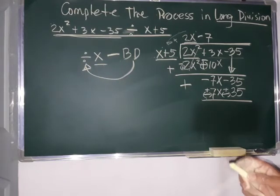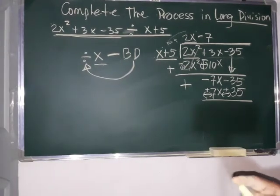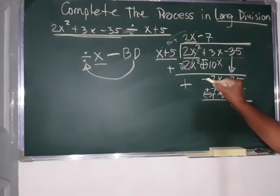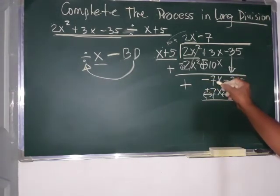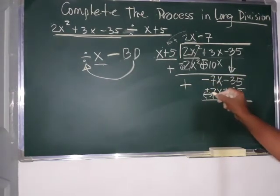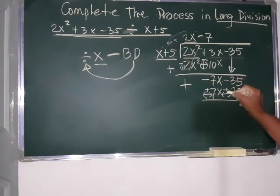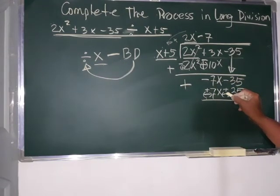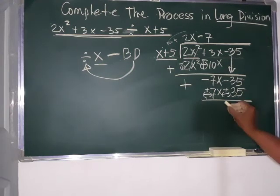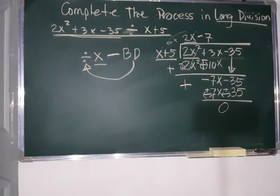Rules of addition. If they have unlike sign or they are unlike sign, subtract. Okay. Negative, positive, unlike sign. The same number. So, 7x minus 7x, zero na siya. Negative, positive. Okay. Subtract. 35 minus 35, zero. So, zero na siya. Therefore, our quotient is 2x minus 7.